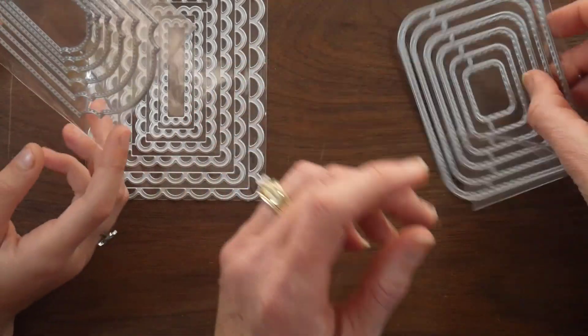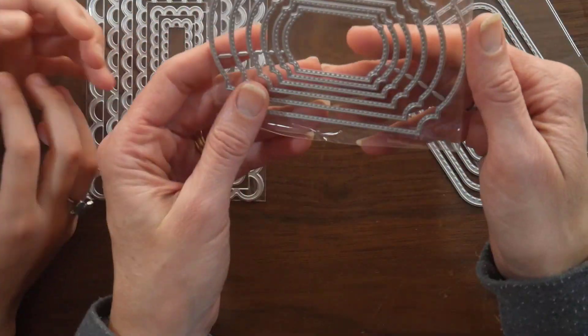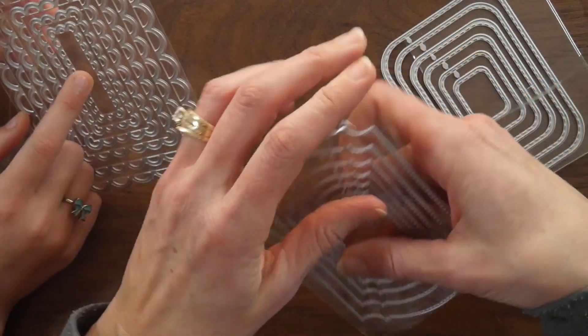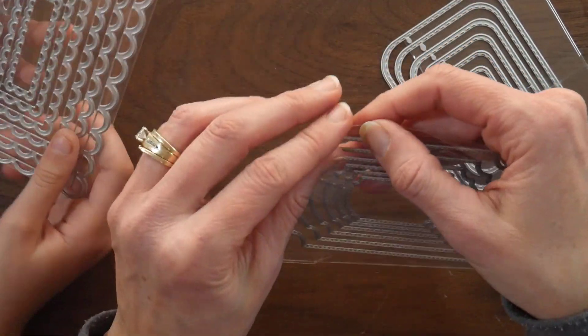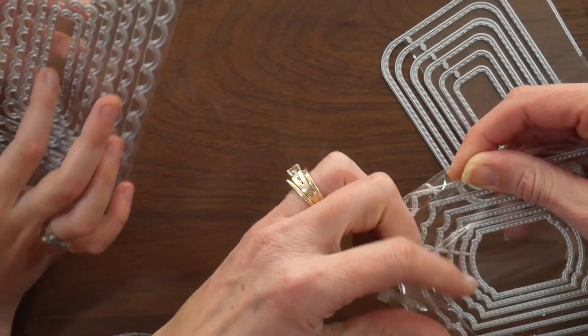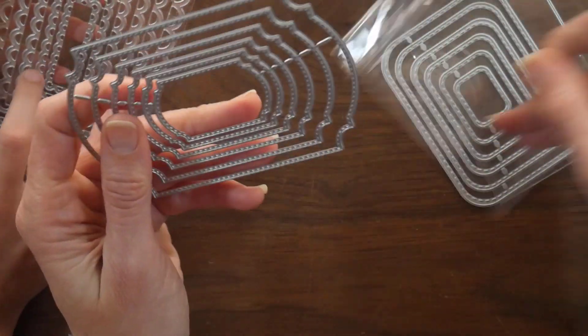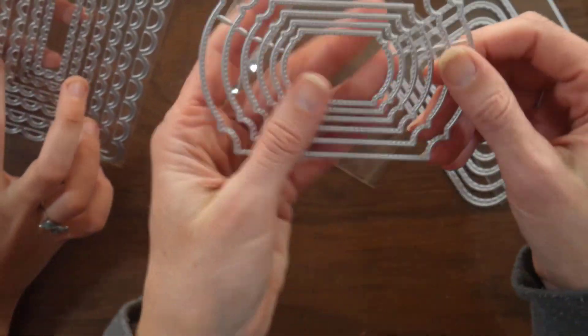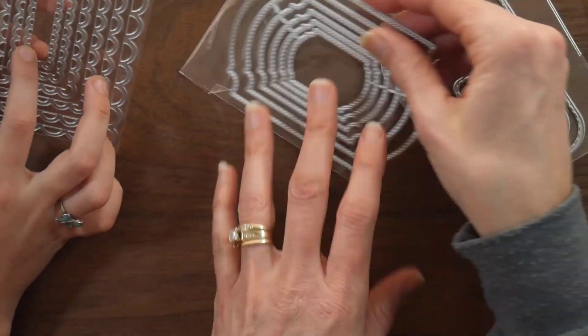So that'll be fun for making card fronts. Yeah, this is another fancy frame that is stitched. And these were all in one set, which was really cool. Gives me a different variety. So this one is stitched in the fancy frame shape and it'll cut out like a little label for the center.